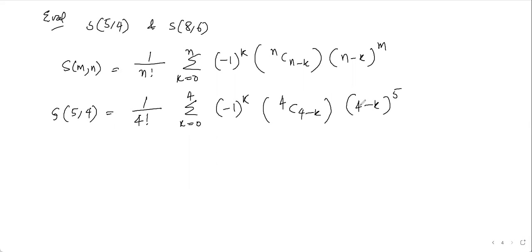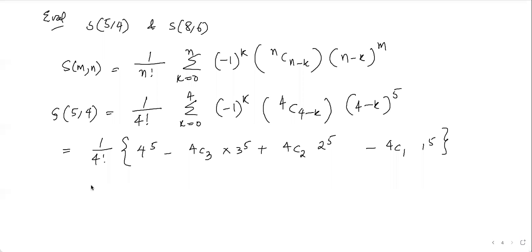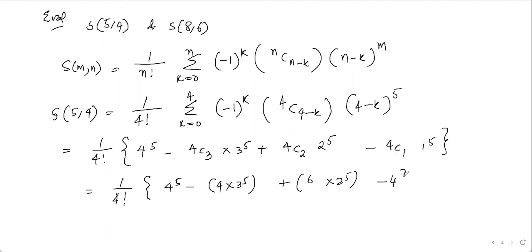For S of five comma four, this becomes one over four factorial times the summation from k equals zero to four of minus one to the power k, times four C k, times (four minus k) to the power five. Substituting the k values from zero to four and solving further, we get 240 divided by four factorial, which equals 10.